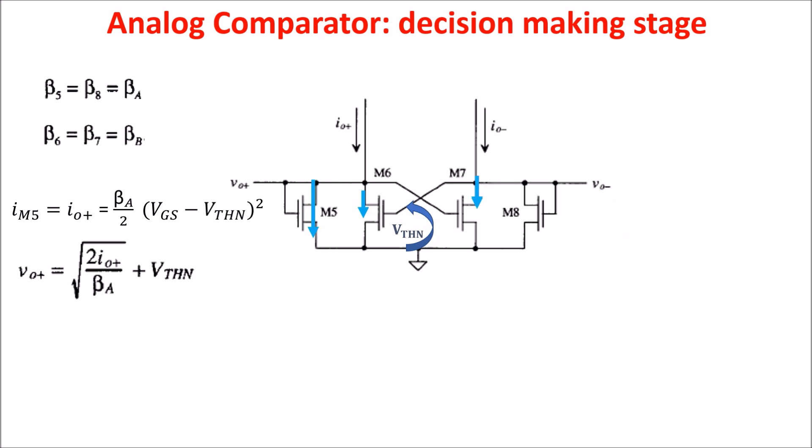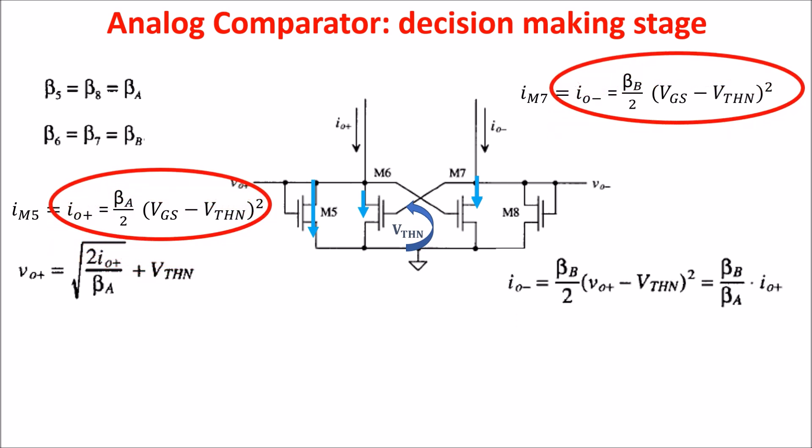But before turning off, M7 reaches the V threshold of M6, where switching point occurs, and at this point M7 operates in saturation region, and its current is this. From these relations, we get this equation, which ties the two currents to the ratio of the betas. This is important because this is the point in which the switching takes place, when M6 is turning off and M7 is turning on. If the beta A and beta B are equal, the switching occurs when IO plus is equal to IO minus, but if beta A is different from beta B, we have hysteresis.